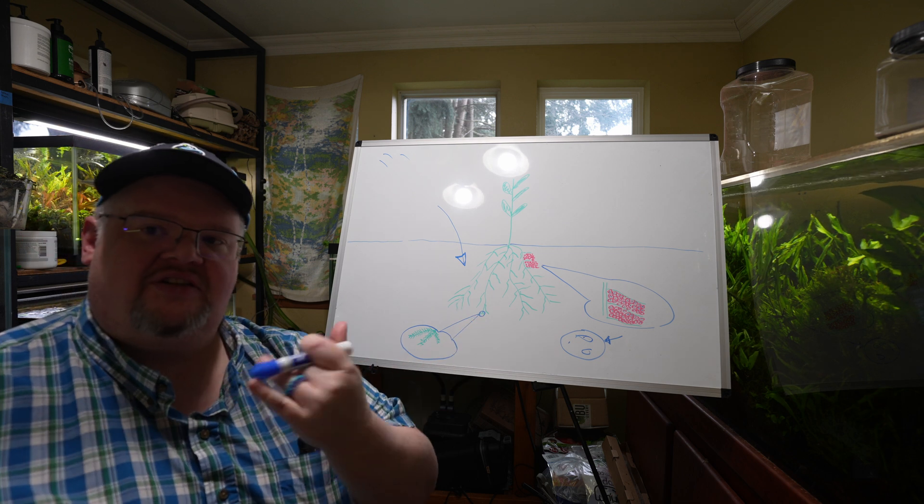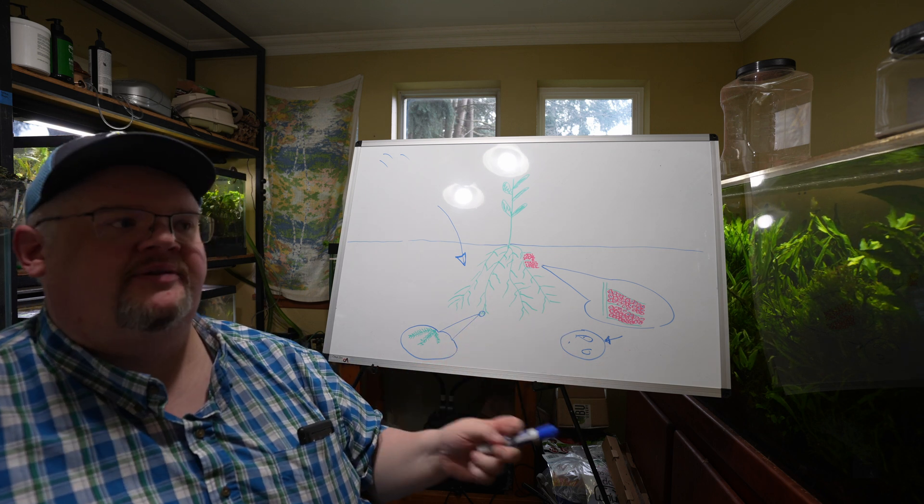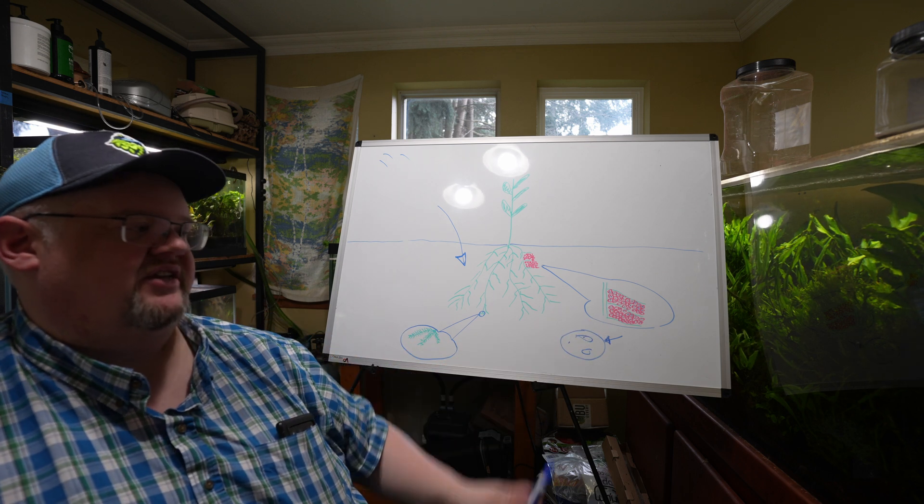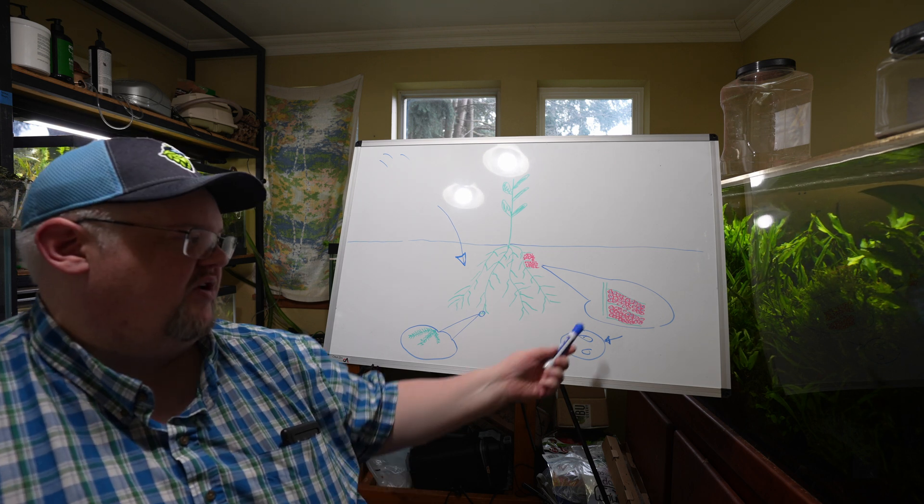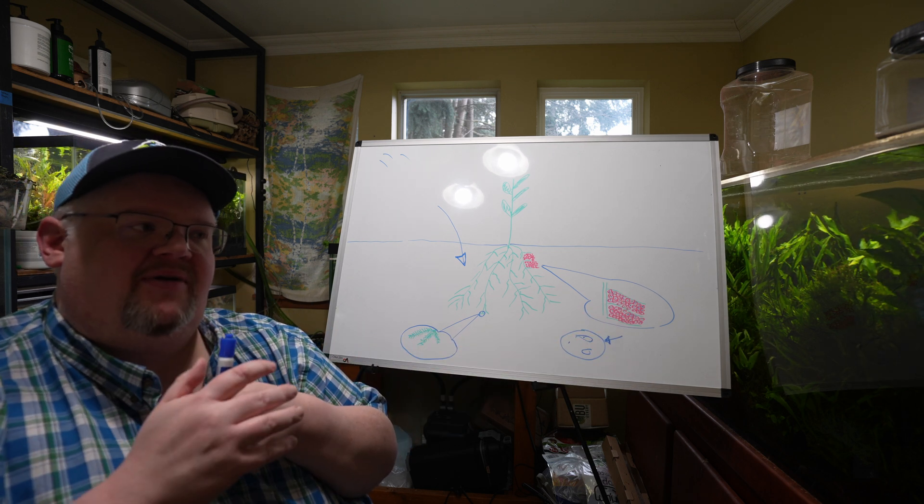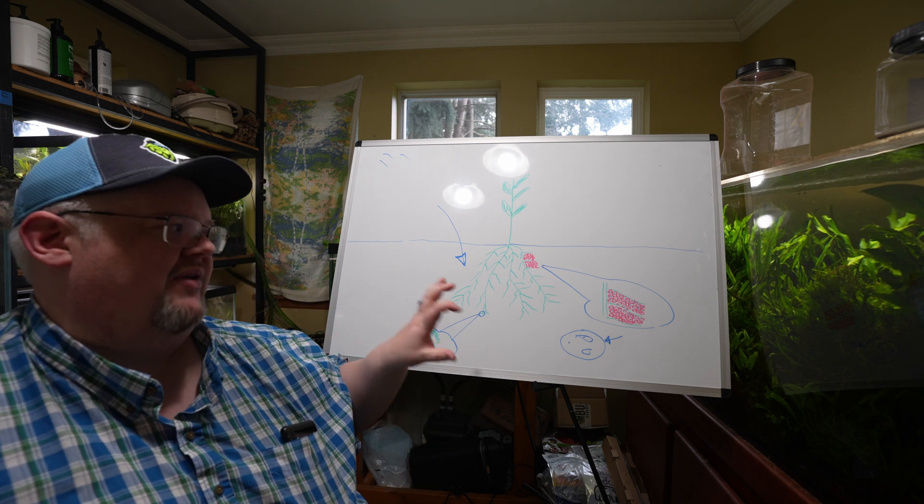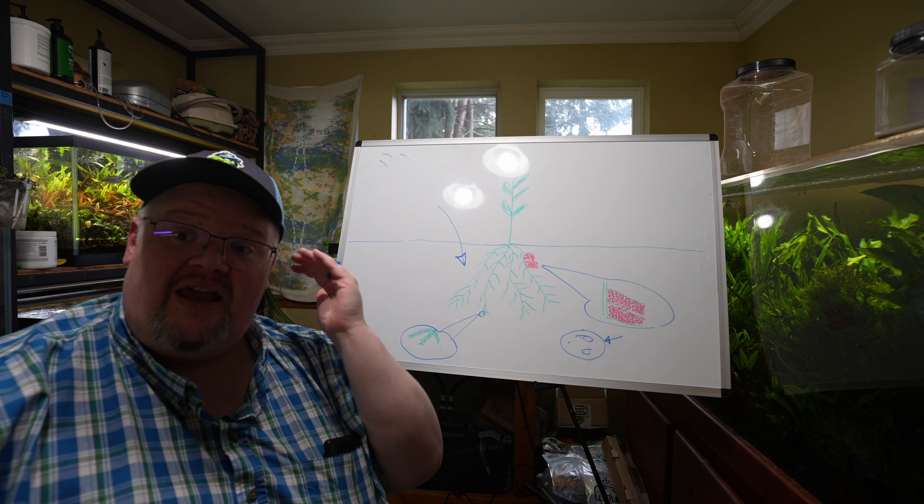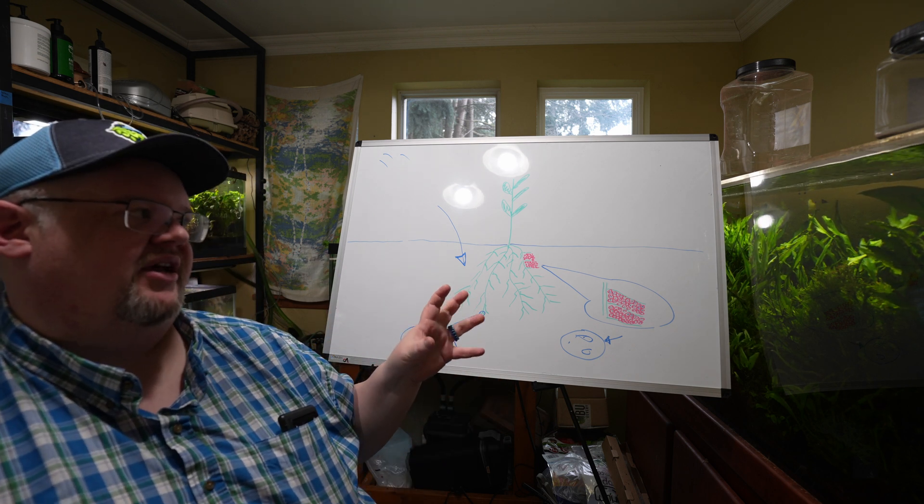But the important thing for us as fish keepers to understand is that our more active soils, the ones that have higher cation exchange capacity, they help facilitate this process. And that process is far more important for our root feeding plants because they really need their roots to connect into these bits of soil in order to make that process happen. Now, if you go a lot deeper into this, it actually involves bacteria and all sorts of crazy nonsense when it comes to how it occurs in aquariums. But we don't need that level of detail right now. And frankly, that's over my head. Leave that to the real scientists.